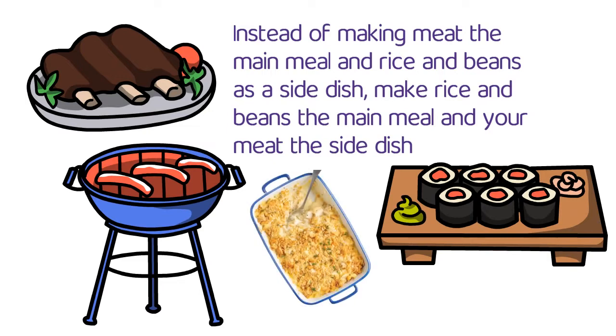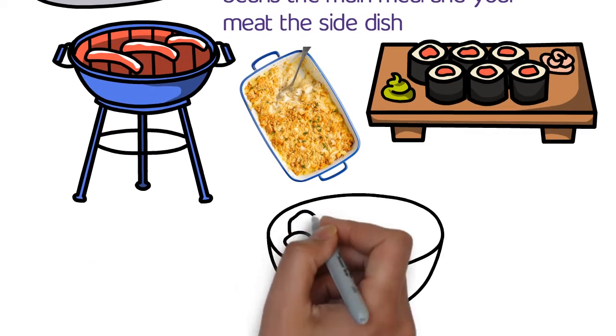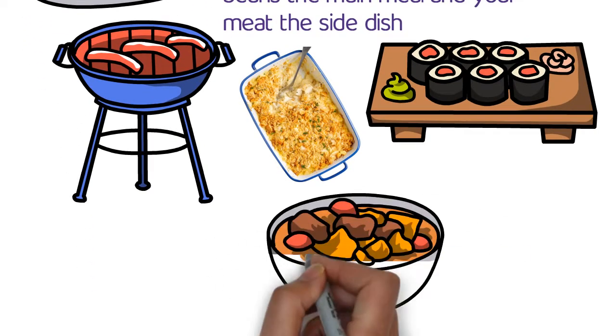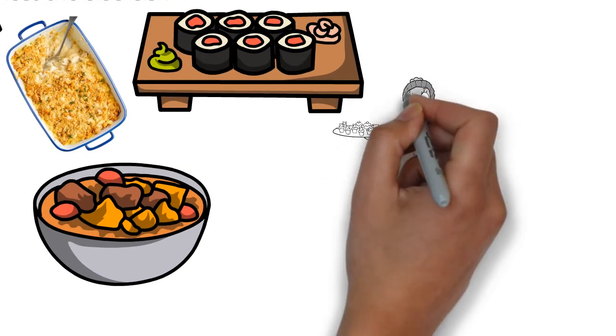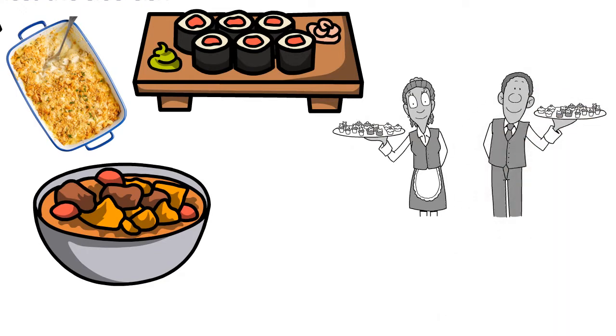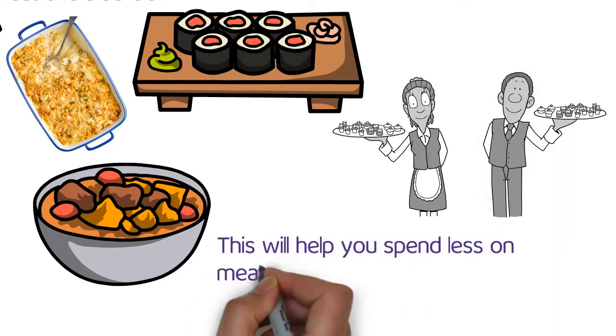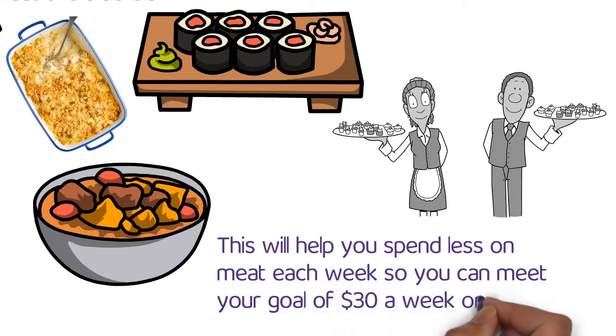For example, if you're making a casserole, try chopping up your meat really small and only using half of the meat that the recipe calls for. That way you can make two meals out of the meat instead of just one. This will help you spend less on meat each week so you can meet your goal of $30 a week on groceries.